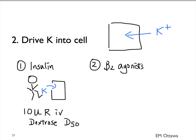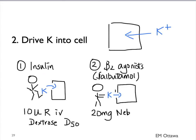The second is beta-2 agonists such as salbutamol. It also pushes potassium into the cell. The dose is 10-20 mg by nebulizer.